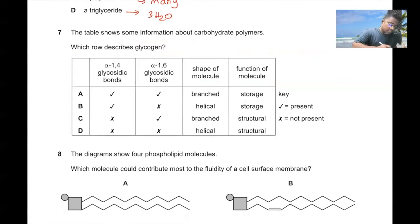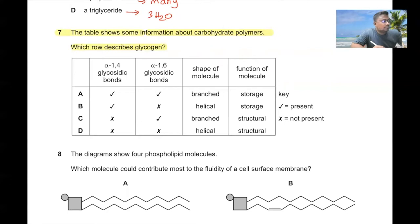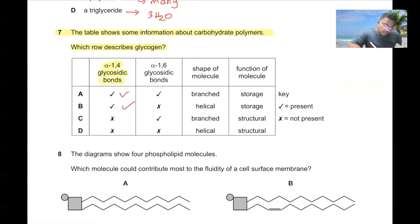Question number seven. The table shows some information about carbohydrate polymers. Which row describes glycogen? Glycogen contains 1,4-glycosidic bonds — correct. It also contains 1,6-glycosidic bonds, meaning it is branched. It is used for storage. A is the correct answer.